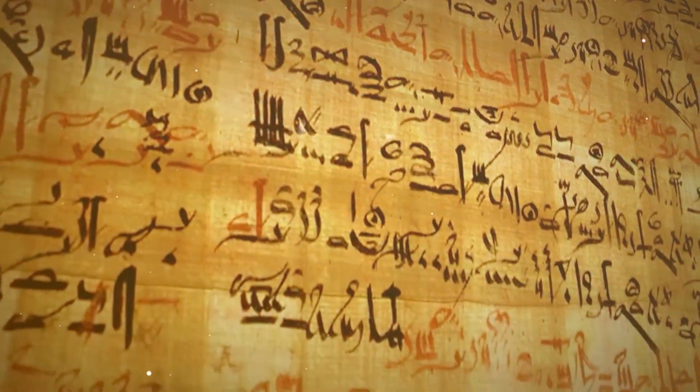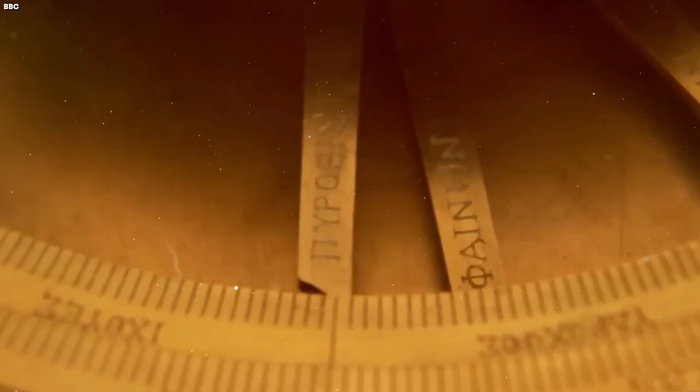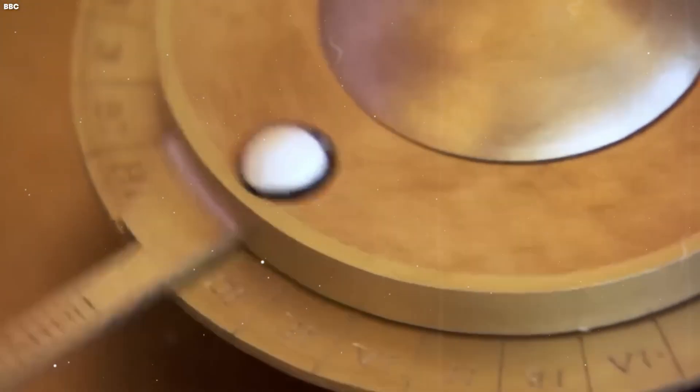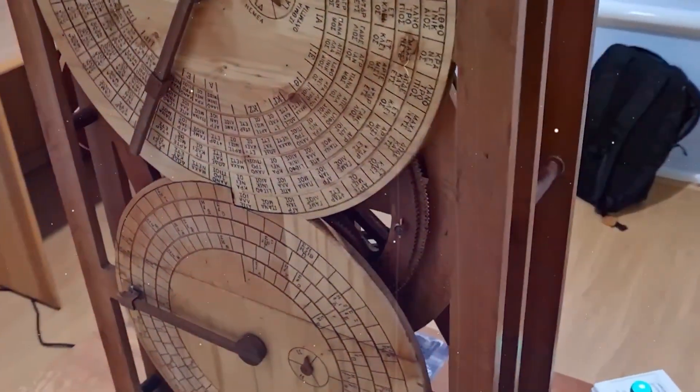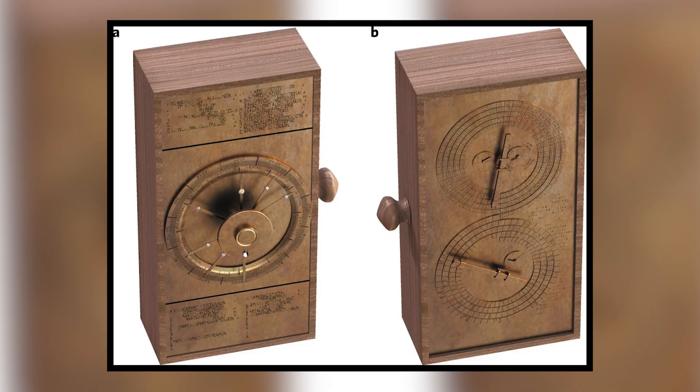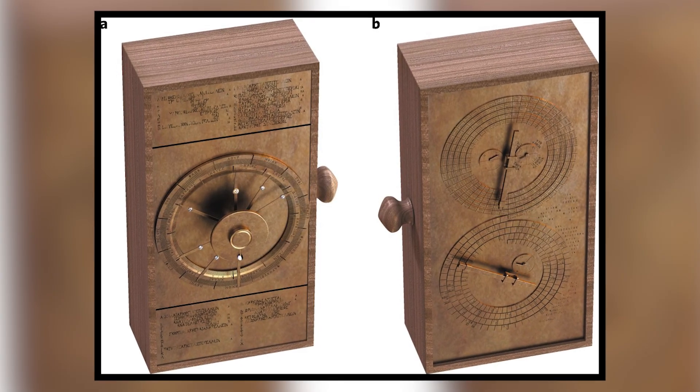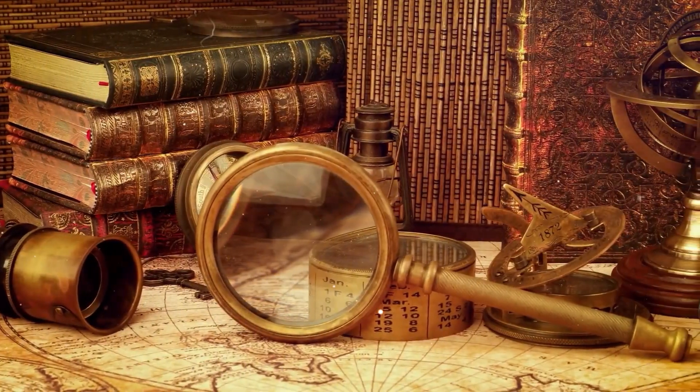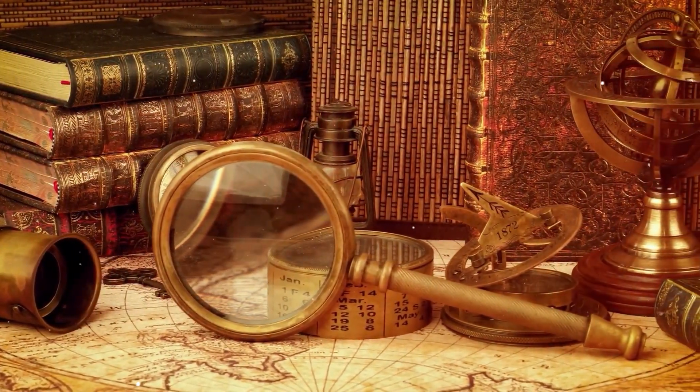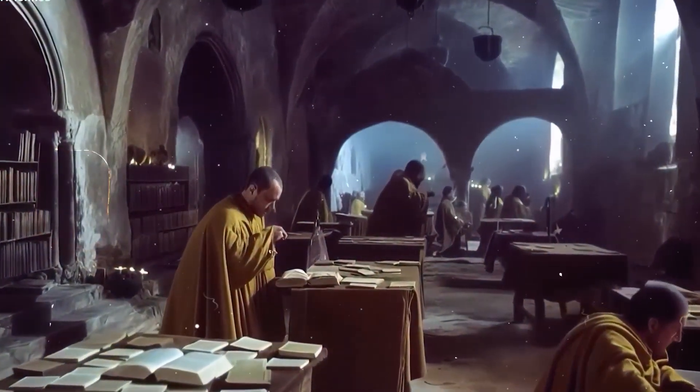But this device proves that ancient Greece possessed knowledge and craftsmanship that wouldn't reappear until over a thousand years later, during the Renaissance. It's as if the brilliance of an entire era was compressed into this one fragile machine. The Antikythera mechanism wasn't just a calendar or a calculator—it was a statement, proof that humanity's capacity for innovation is timeless, a window into how advanced the ancient world truly was, and a haunting reminder of how much of that brilliance we've lost to time.